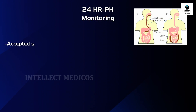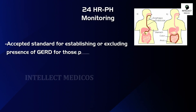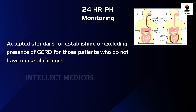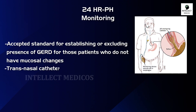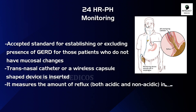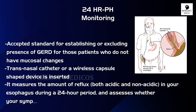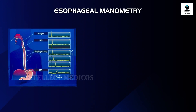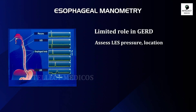The next test is 24-hour pH monitoring — the accepted standard for establishing or excluding the presence of GERD in patients who do not have mucosal changes. A transnasal catheter or a wireless capsule-shaped device is inserted, and it measures the amount of reflux — both acidic and non-acidic — in your esophagus during a 24-hour period, assessing whether your symptoms are correlated with reflux. Esophageal manometry has a limited role in GERD; it assesses LES pressure, location, and relaxation, and also aids placement of the 24-hour pH catheter.